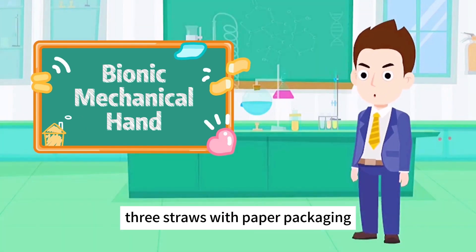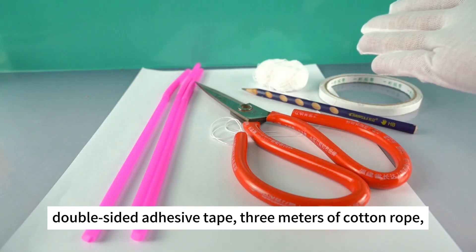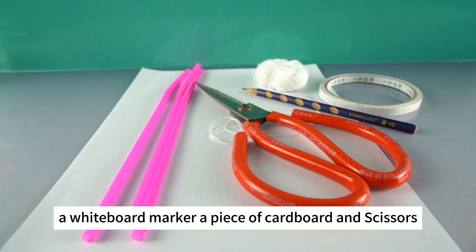Here's what you'll need. Three straws with paper packaging, double-sided adhesive tape, three meters of cotton rope, a whiteboard marker, a piece of cardboard and scissors.